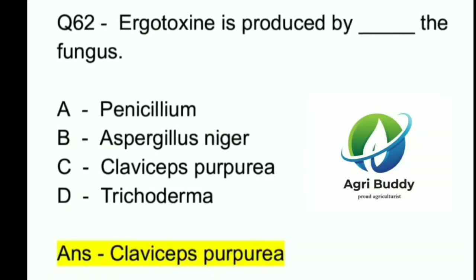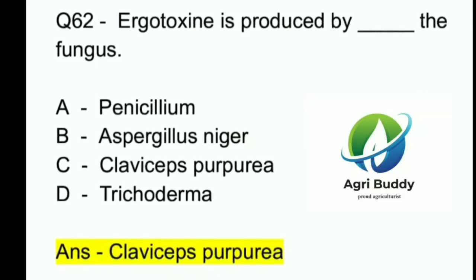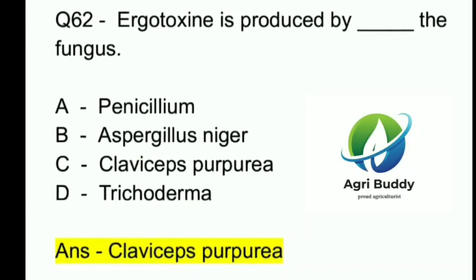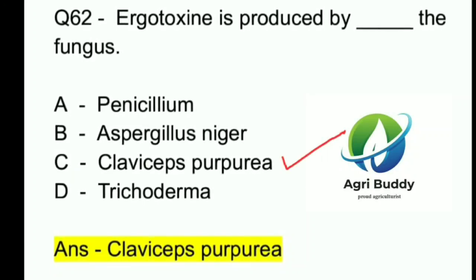Question 62. Ergotoxin is produced by which fungus? A. Penicillium. B. Aspergillus niger. C. Claviceps purpurea. D. Trichoderma. And the answer is Claviceps purpurea.